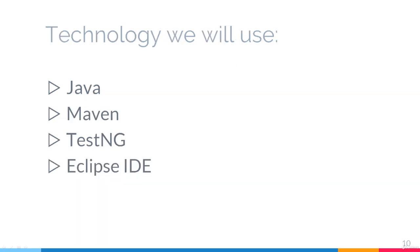REST Assured is a Java library, so we will use the Java programming language, Apache Maven for project management, TestNG as a testing framework, and I will use Eclipse IDE — but you are welcome to use IntelliJ or another IDE if you want.